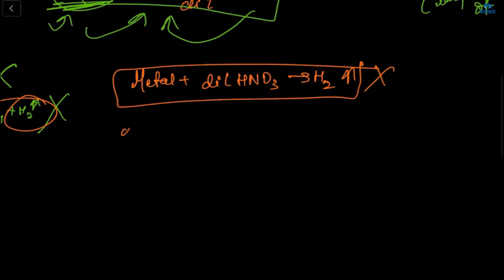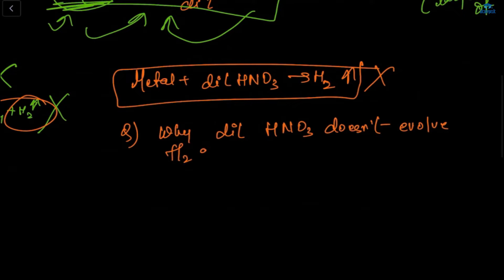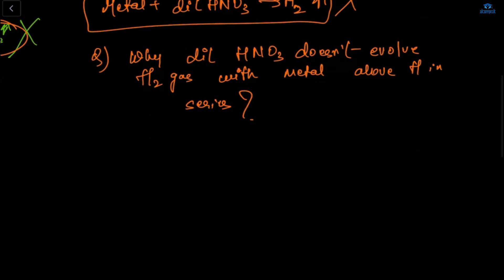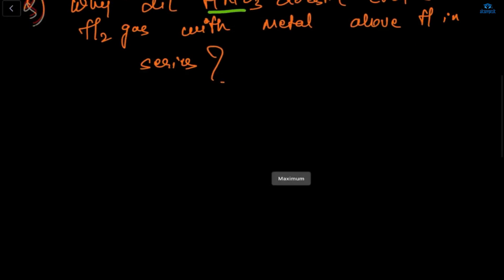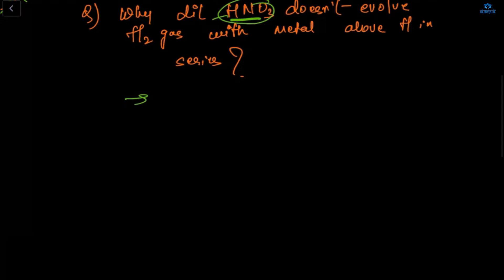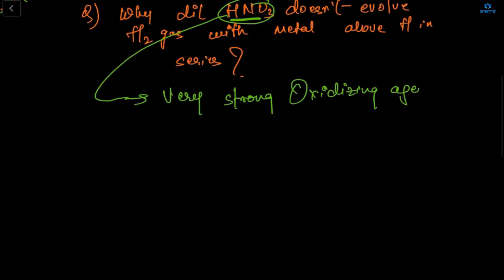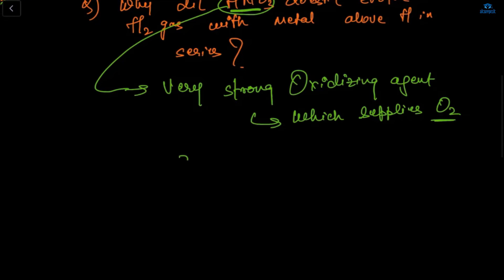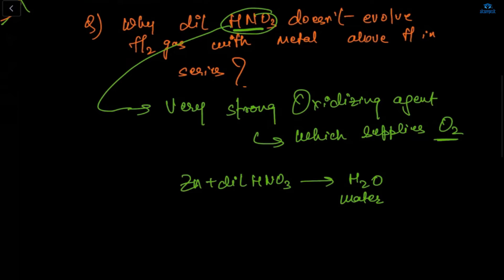Why doesn't dilute HNO₃ evolve H₂ gas with metals above hydrogen in the series? Because HNO₃ is a very strong oxidizing agent — it supplies oxygen. So any hydrogen evolved is oxidized to water instead.